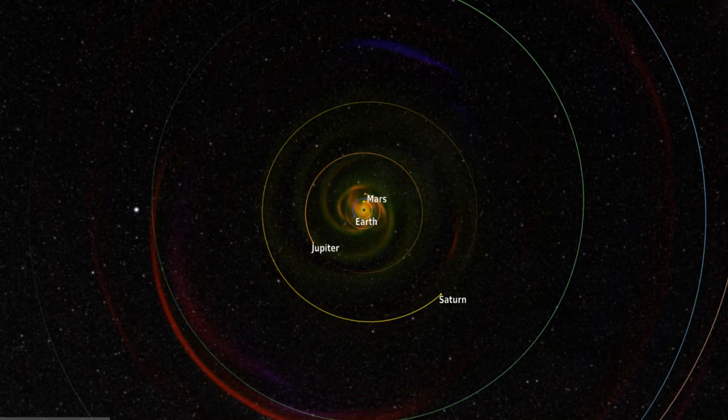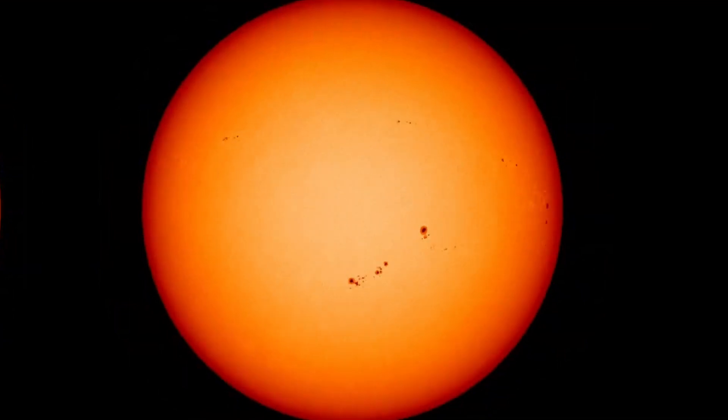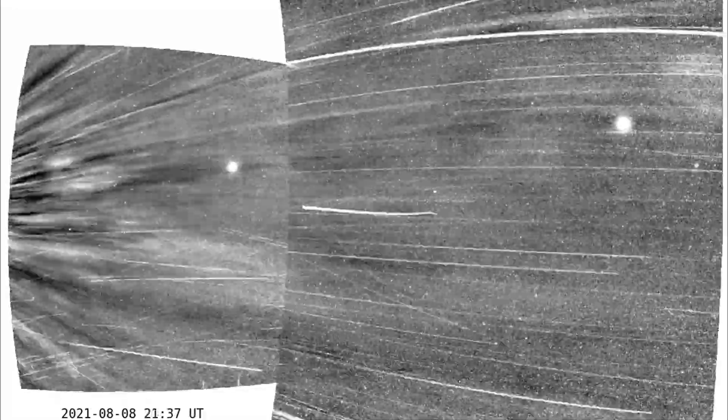This expectation was based on a solid foundation. For decades, the strength of the solar wind and the number of sunspots had been steadily declining. Many experts believed we were entering a prolonged quiet period, similar to those seen in past centuries. But the sun had other plans.